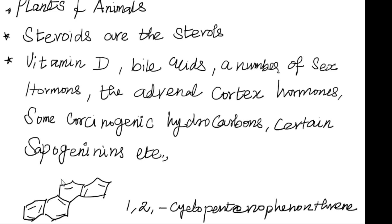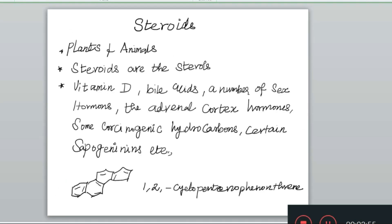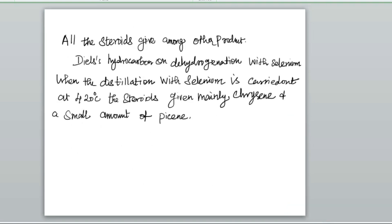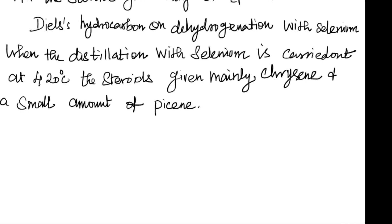This was identified in 1927. In fact, steroids could be defined as any compound which gives Diels hydrocarbon when distilled with selenium. When the distillation with selenium is carried out at 420 degrees centigrade, the steroids mainly give chrysene and a small amount of picene.